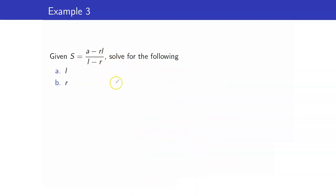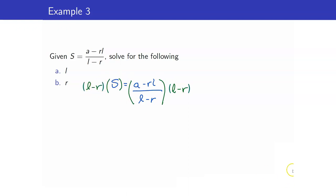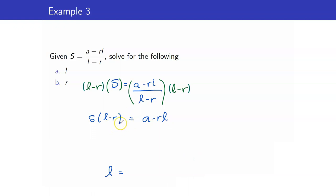Another example: we are given that S is equal to A minus RL all over L minus R. Let us solve for L. Just like before, I want to get rid of the denominator first. So I multiply both sides by L minus R, giving us S times the quantity L minus R is equal to A minus RL. Remember we want to obtain L in the end, so we need to collect all the L's on one side and factor out L. First, I will distribute S: SL minus SR is equal to A minus RL.